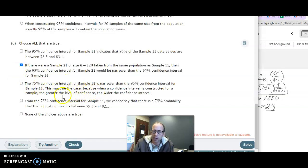And this is something we mentioned. The greater the level of confidence, the wider the confidence interval. Or the wider the confidence interval, the greater the level of confidence that you're going to catch the population mean. We cannot say that there's a 75%. That's true. It's either 100% that you caught it or 0% that you didn't.